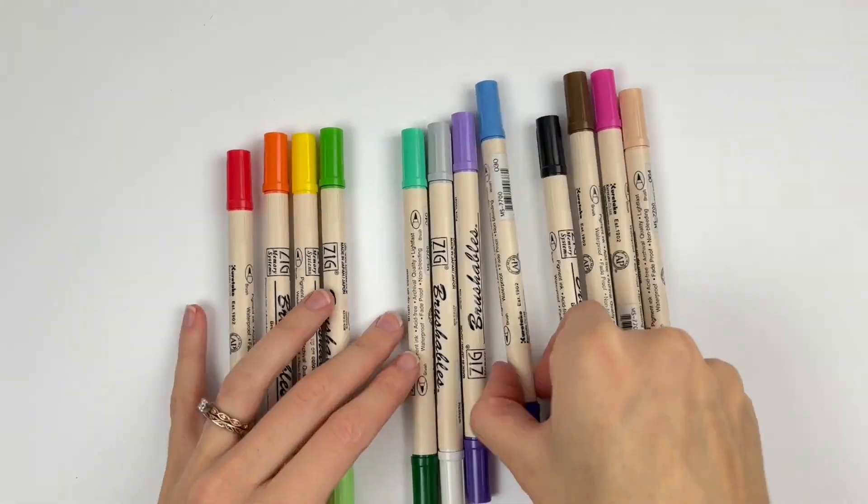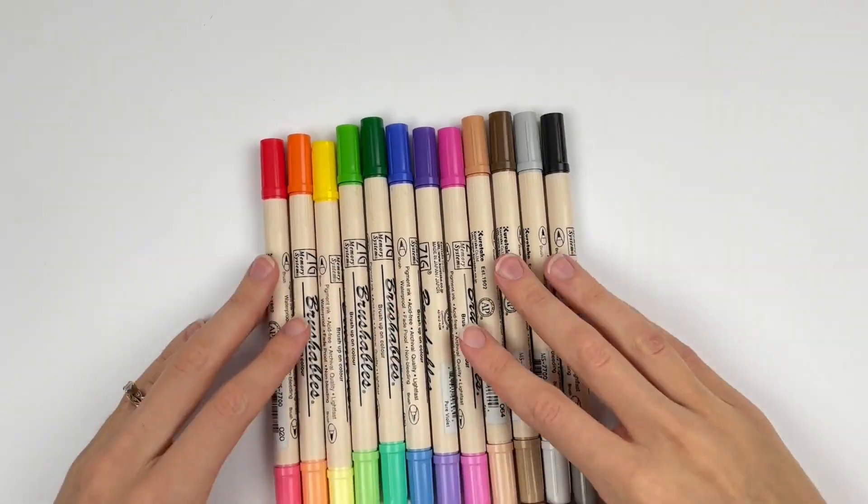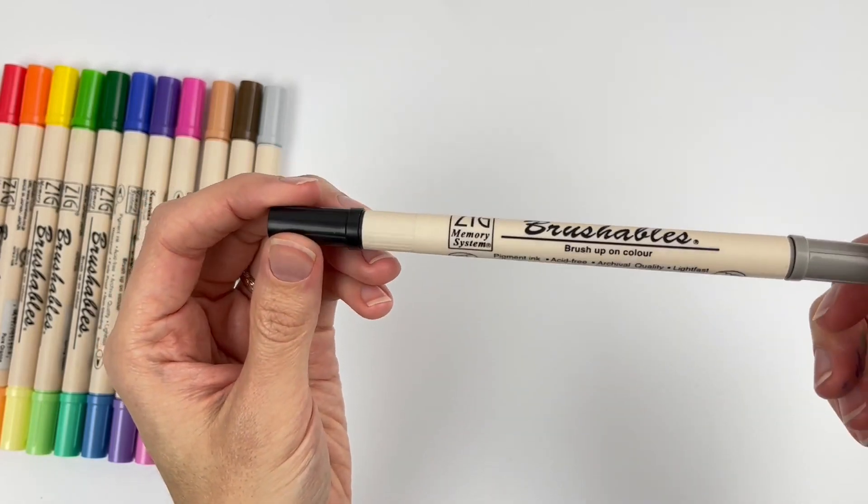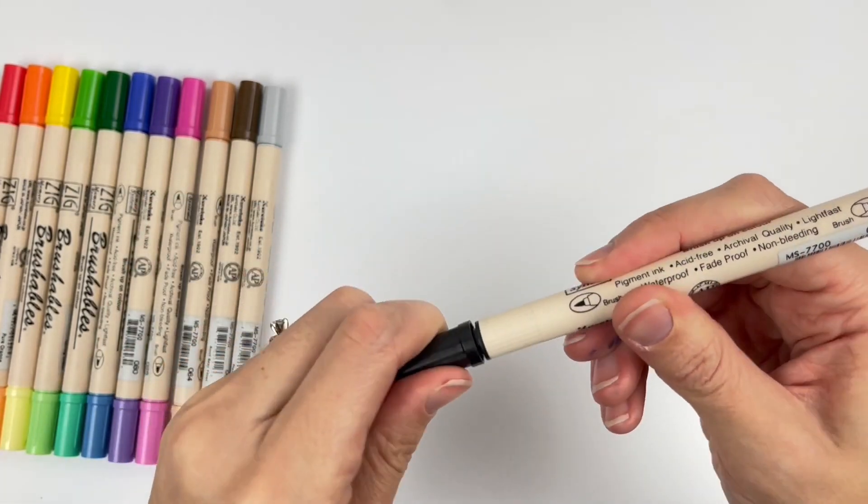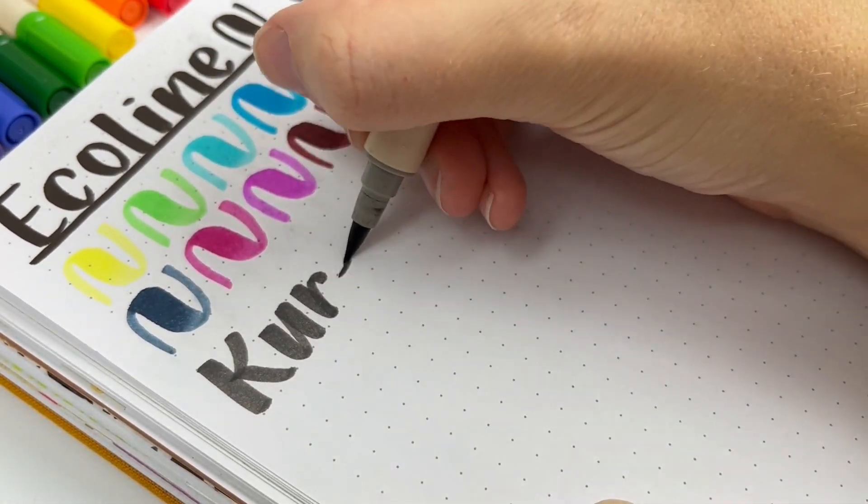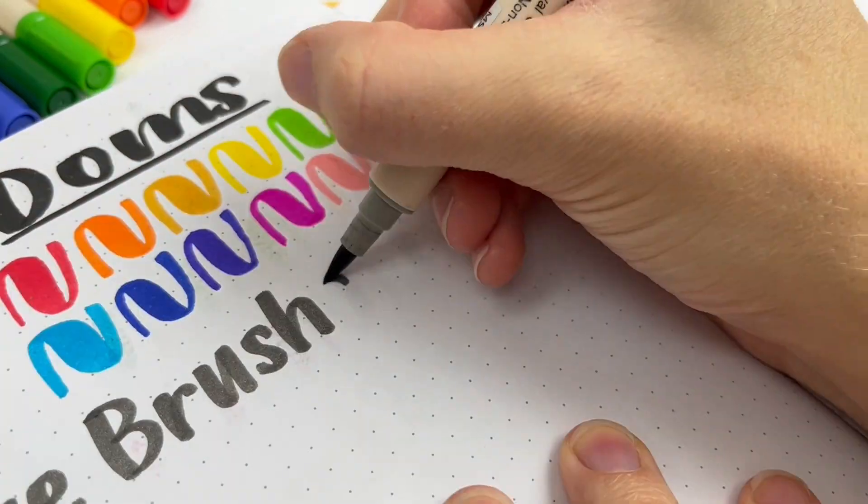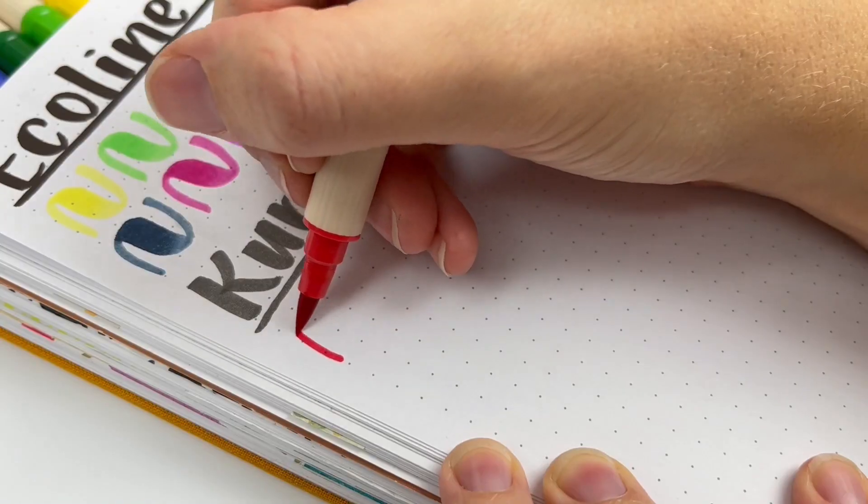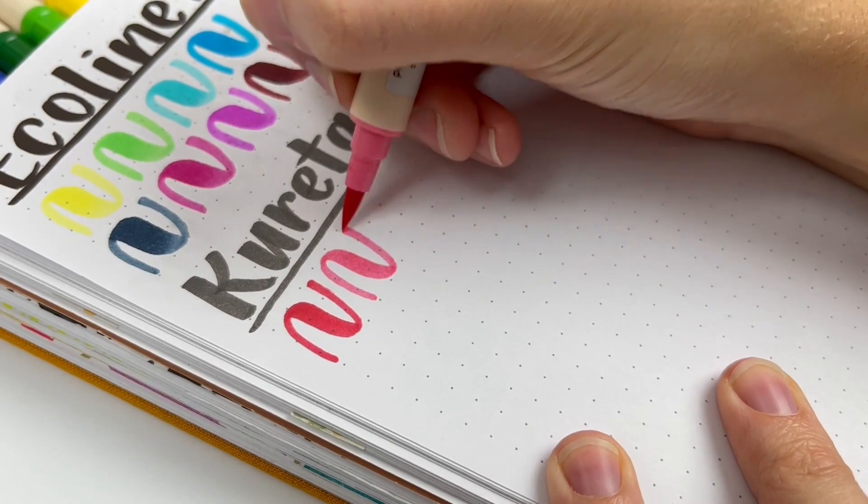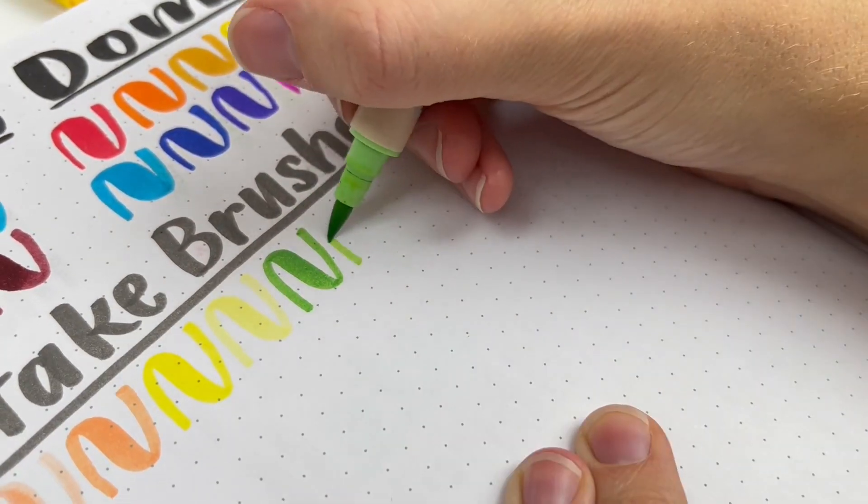Next, we have the Kuretake Zig Brushables. These ones are so great, but not as popular because I think they're harder to find. I bought the whole set at Hobby Lobby in 2016 when I first started, but Hobby Lobby doesn't sell them anymore. I've seen some sets on Amazon. They're more expensive because they are waterproof and pigment-based, which means they're more likely to be light-fast, so they won't fade. They are dual-ended, but with a brush tip on both sides.